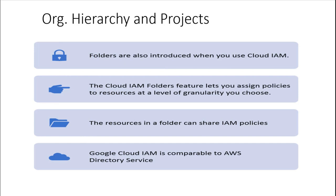Folders are a newer addition to Google Cloud, part of Cloud Identity and Access Management. With Cloud IAM folders, you can assign policies to resources at whatever granularity you choose. For example, if you deploy Cloud Storage, you can specify who can access that resource, when, how, and from where. This gives a lot of flexibility in how resources are handled. For those familiar with AWS, this is very similar to AWS Directory Services.